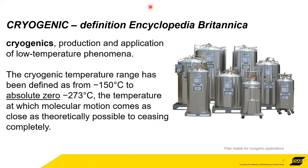So we want to talk about cryogenics — it's a funny word, becoming more and more prevalent these days. What does cryogenics mean? Listed out of the Encyclopedia Britannica: cryogenics is the production and application of low temperature phenomena. The cryogenic temperature range is defined as being from minus 150°C, going right down to absolute zero. You can't get colder than minus 273°C. That's the kind of temperatures we're talking about.